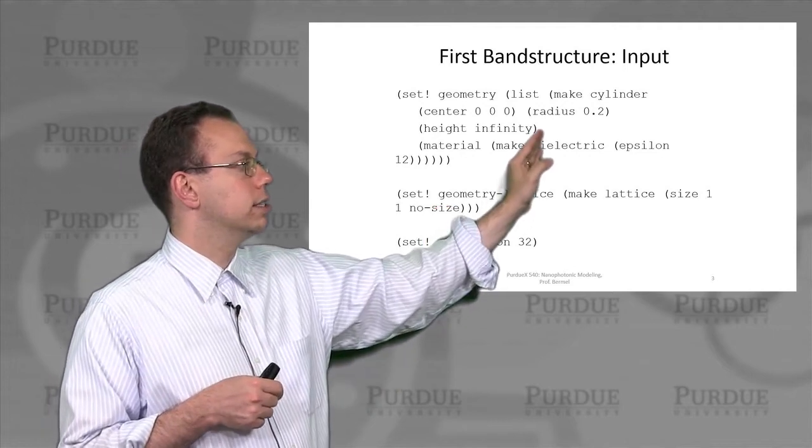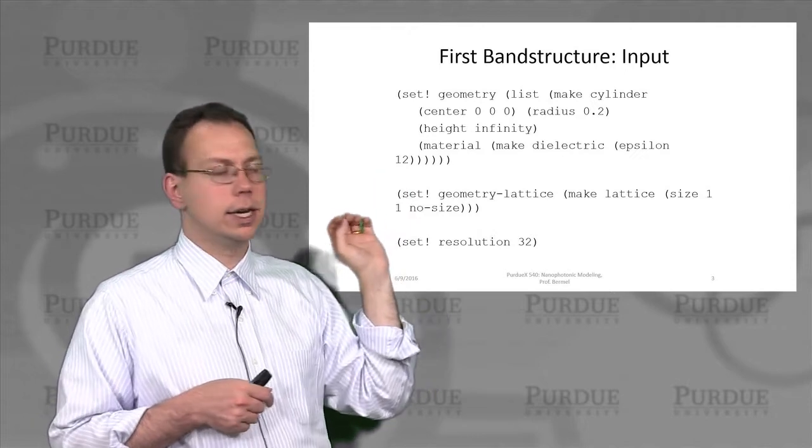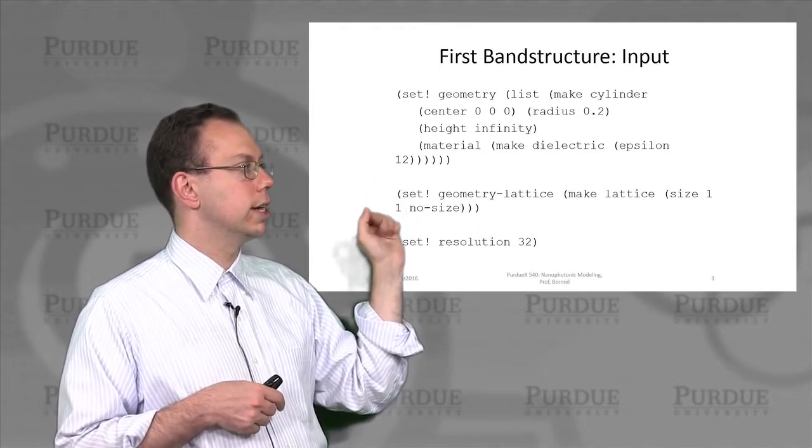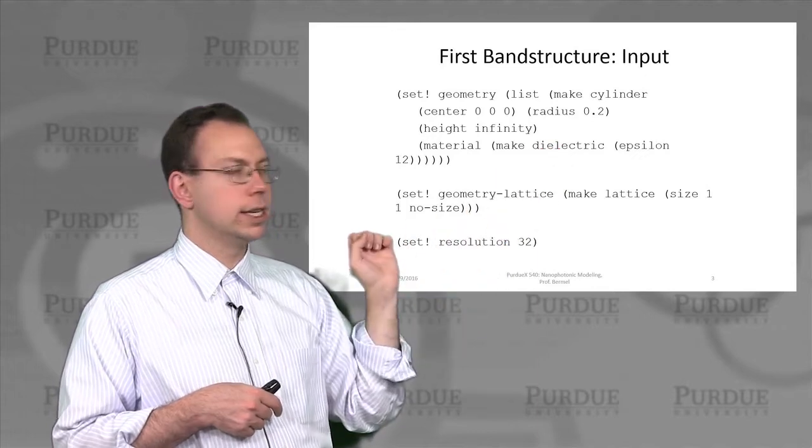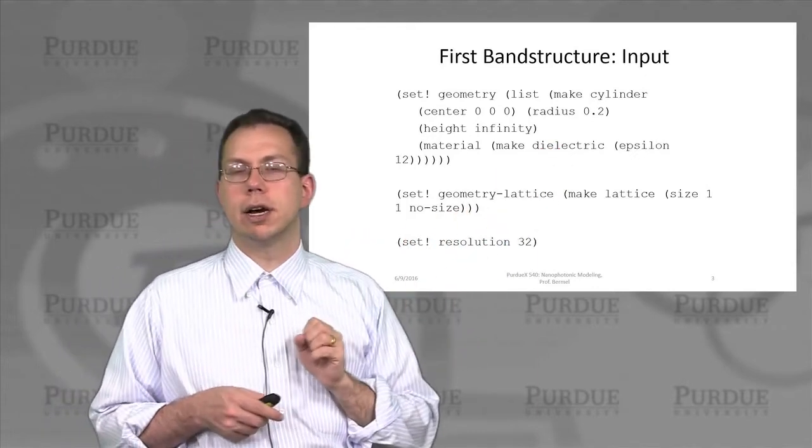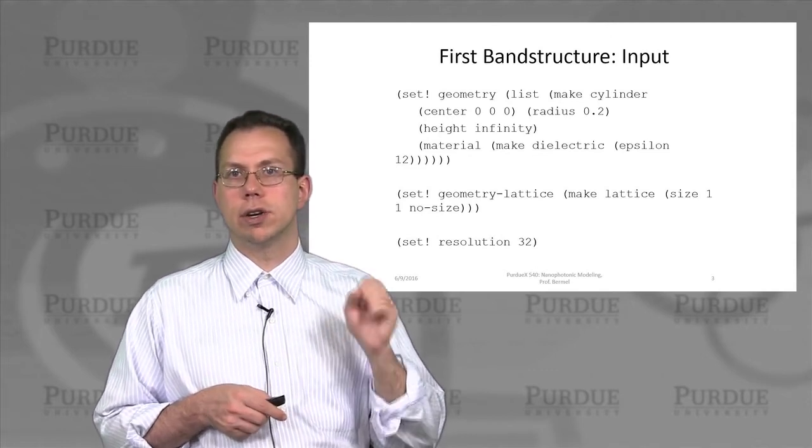It has a radius of 0.2, has a center of 0. We give it a height of infinity just because there's no specific height associated with it. Then we define the epsilon here using this syntax. And then we set the resolution of the calculation to be 32 grid points per unit distance.